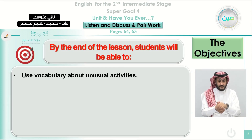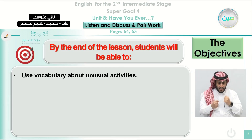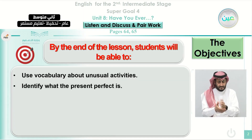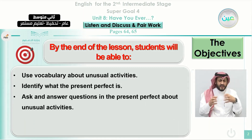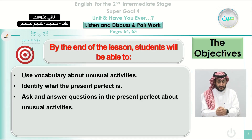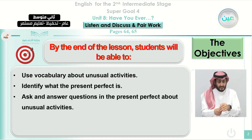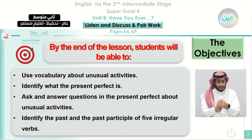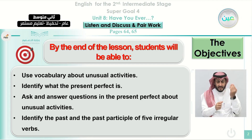By the end of the class, insha'Allah, students will be able to use vocabulary about unusual activities. Students will be able to identify what the present perfect is. Students will be able to ask and answer questions in the present perfect about unusual activities. And also by the end of the class, students will be able to identify the past and the past participle of five irregular verbs.